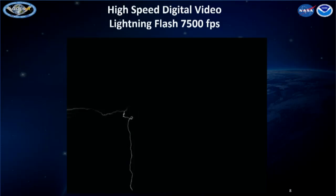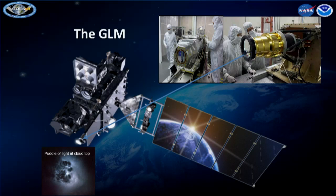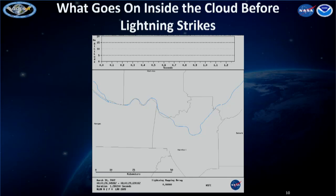That's a flash lasting a few seconds. So here's the GLM — it's a single telescope. One earlier concept involved two telescopes for a yaw flip maneuver, but we ended up with one. Here's a photo from an ER-2 high-altitude airplane showing the pool of light you get at the top of the cloud — if it's bright enough, we'll see it from space.